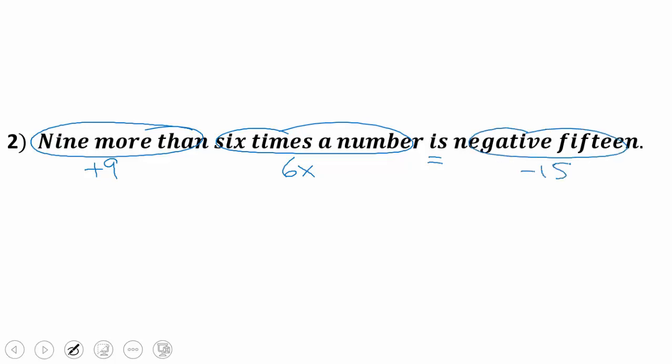So now I can just put all that together. Remember the commutative property says I can add a positive nine with a positive six X, or I just like to write my variable first. Plus, if I follow nine more than, it would be adding on the end. And that's equal to negative 15.